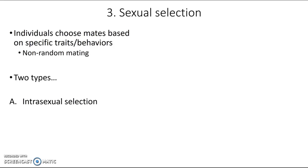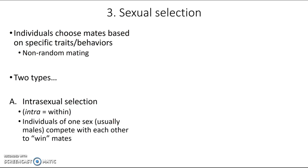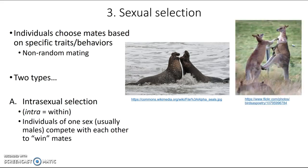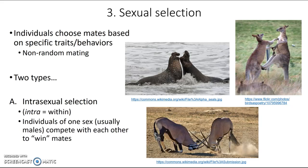The third process that causes microevolution is sexual selection, which occurs when individuals choose their mates based on specific traits or behaviors — another example of non-random mating. There are two types. The first is intrasexual selection — 'intra' meaning within — where individuals of one sex, usually males, compete with each other to win mates. Examples include elephant seals, kangaroos, and antelope fighting with their horns for the right to mate with females. Females generally prefer to mate with the winners.